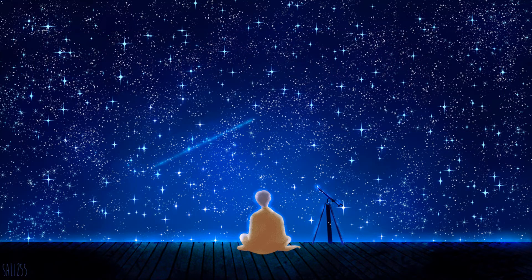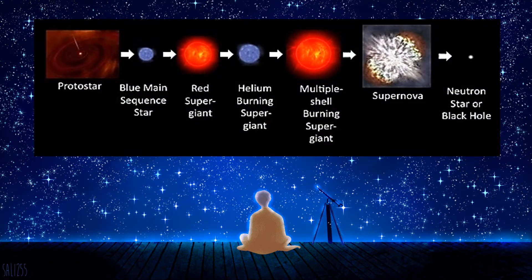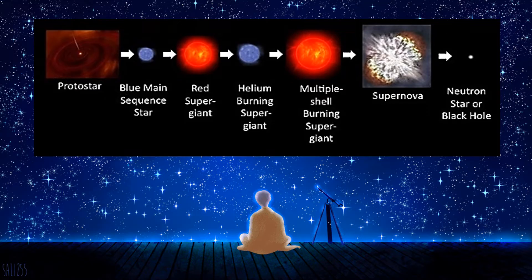However, the fate of a massive star is different. A massive star has enough mass such that temperature and pressure increase to a point where carbon fusion can occur. The star goes through a series of stages where heavier elements are fused in the core and in the shells around the core. The element oxygen is formed from carbon fusion, neon from oxygen fusion, magnesium from neon fusion, silicon from magnesium fusion, and iron from silicon fusion. The star becomes a multiple-shell red supergiant. The fusion of elements continues until iron is formed by silicon fusion.